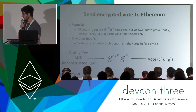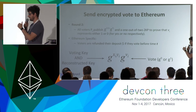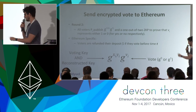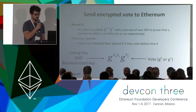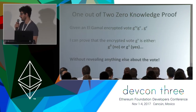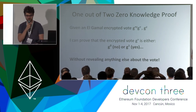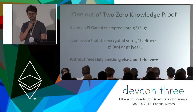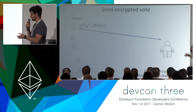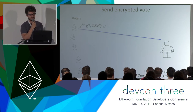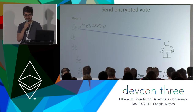To cast our vote, we do an ElGamal encryption of the vote using the voting key and reconstructed key, where the vote is either g to the power of 0 or g to the power of 1 — essentially a yes or no vote. We then construct a 1-out-of-2 zero-knowledge proof that proves the encrypted vote is either yes or no, meaning the vote is well-formed, and we reveal nothing else about our vote. I create an Ethereum transaction that includes my ElGamal encrypted vote and my 1-out-of-2 zero-knowledge proof, send it to the contract, the contract verifies the vote is well-formed, stores it, and releases the deposit.